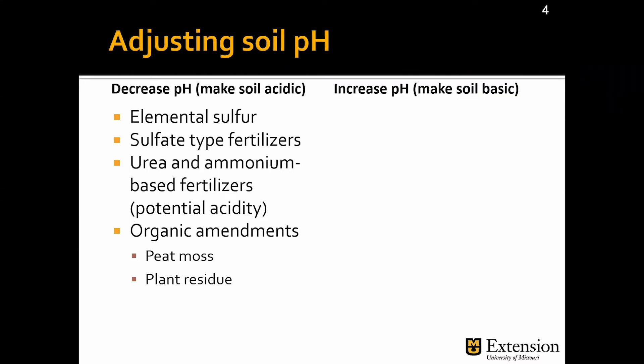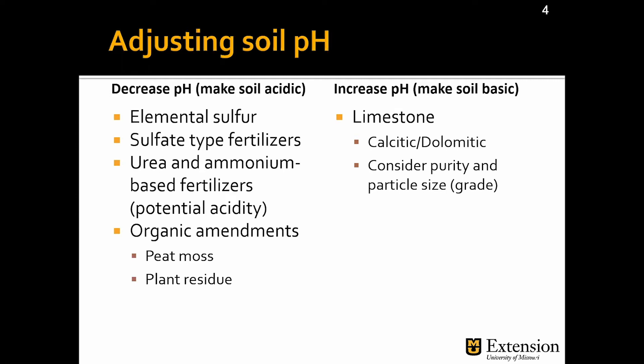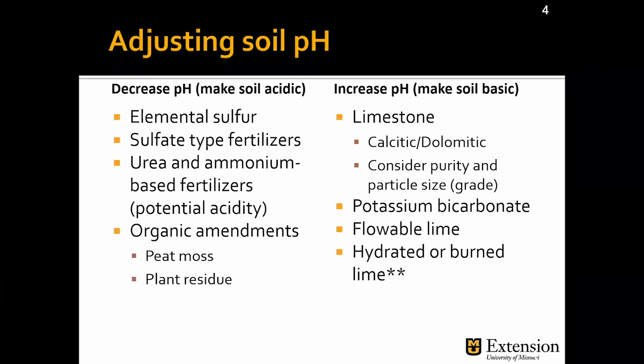On the other hand, when the pH is too low and you want to increase the pH or make it more basic and alkaline, you can use limestone, and there are several options. You have calcitic limestone, which provides calcium as a nutrient, and dolomitic limestone that provides both calcium and magnesium as nutrients. Consider that the purity of the material and the particle size or grade will affect how effective this material is at changing the pH. We also have potassium bicarbonate, which is water soluble and can be injected in water. Flowable lime, hydrated or burned limestone are highly reactive materials that can burn or damage your crop — use these with caution and make sure there are no plants present when you apply them.